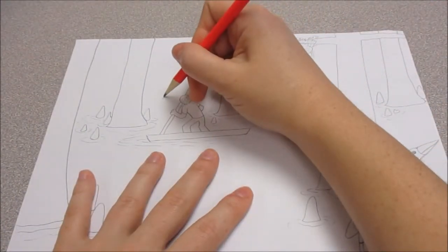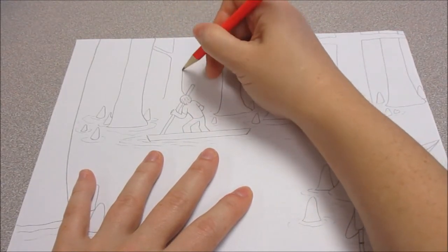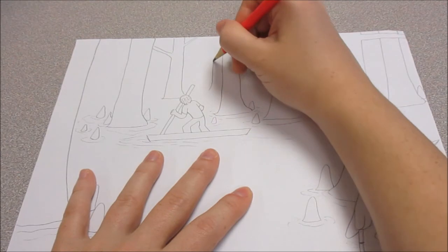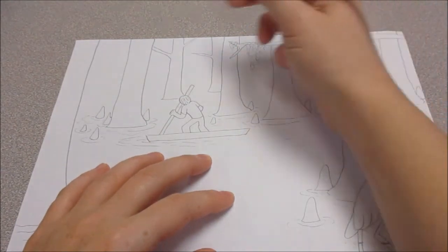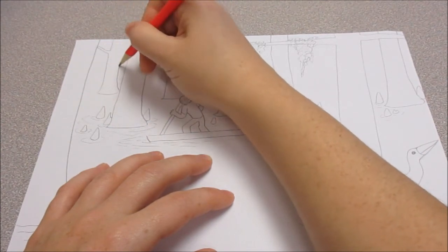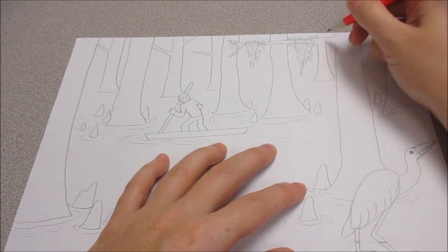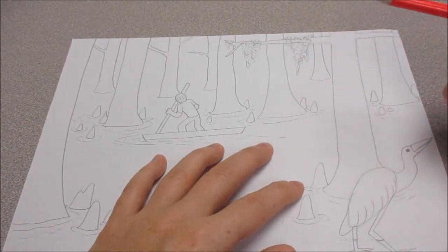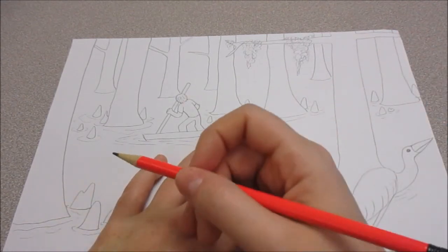And again, smaller trees further back. I'm going to start seeing branches. If I see a tree further away, I'm more likely to see its branches. I'm going to start adding branches. Remember that the trees with branches, you can have the Spanish moss hanging off the branches. So I'll add some of that in a second.